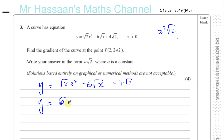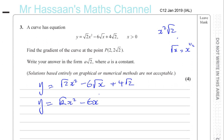We have root 2 times x squared, which is fine. For the x terms, we want to write them in index form. We know that root x means x to the power of a half, because x to the power of a half times itself gives x. So you have minus 6 times x to the power of a half, and then plus 4 root 2 — no problem with that last term.